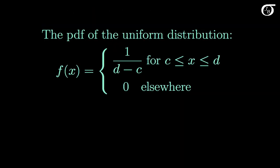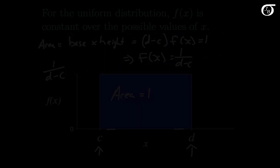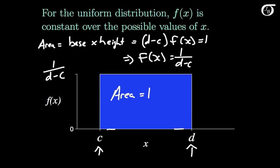Here's the probability density function of the uniform distribution. f equals 1 over d minus c between c and d, and 0 elsewhere. So the height of the curve is 1 over d minus c, but it drops to 0 outside of the interval c to d.